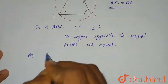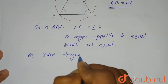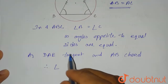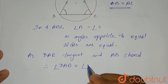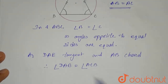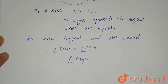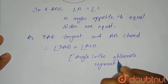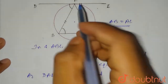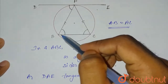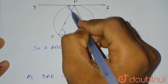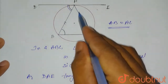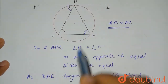Since DAE is a tangent and AB is a chord, therefore angle DAB equals angle ACB, by the angle in the alternate segment theorem. The property is: whenever there is an angle between the tangent and the chord, that angle equals the angle subtended by the chord in the interior alternate segment of the circle. That means AB subtends angle ACB, so angle DAB equals angle ACB.